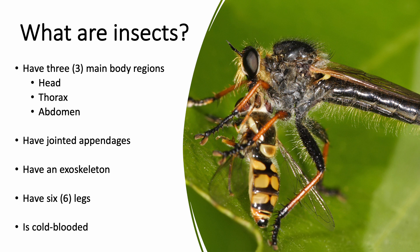Insects are cold-blooded, meaning they cannot create their own body heat. Some can, by vibrating their wing muscles like certain types of bees, but most cannot. In the picture on the right you can see two flies: the bottom fly being eaten is called a syrphid fly, and the top fly eating it is called a robber fly — both are predators.